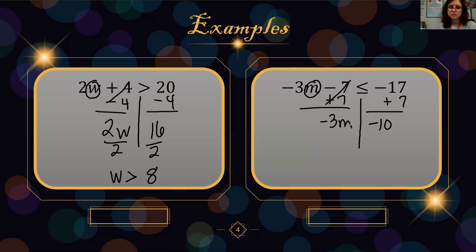I undo multiplication with division. So m is on one side. 10 divided by 3 is 3 and 1 third, or 3.3 repeating. A negative divided by negative is a positive. I did divide by negative, so my inequality symbol will change from a less than or equal to to a greater than or equal to.